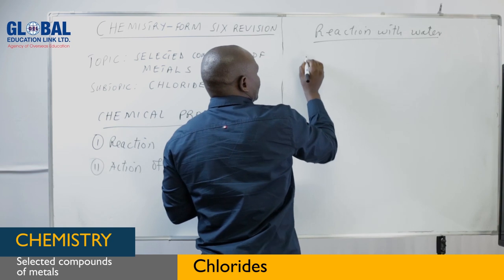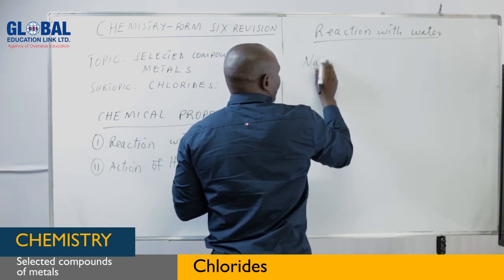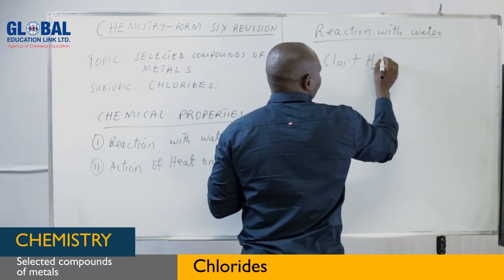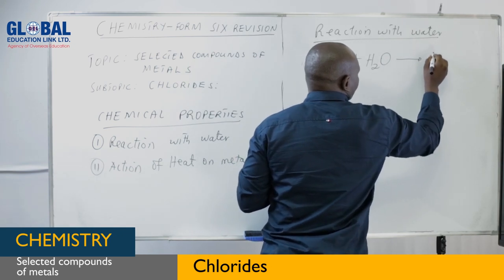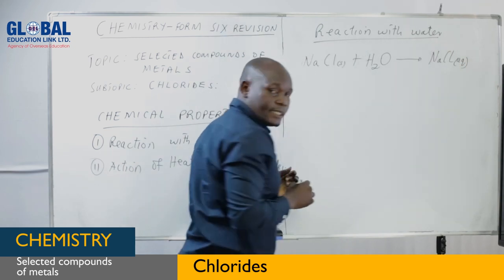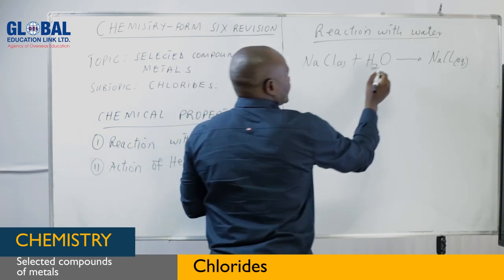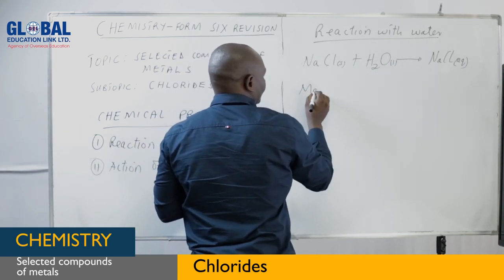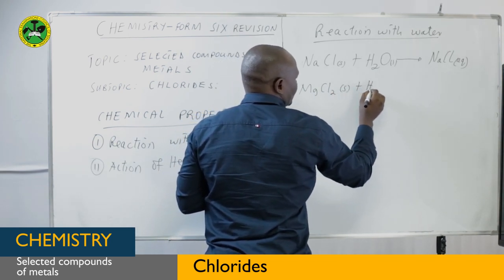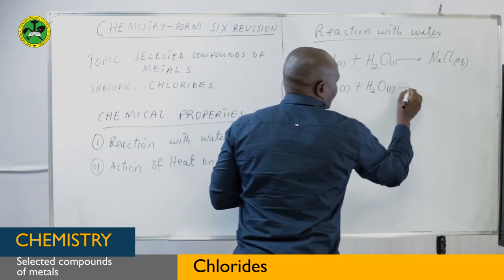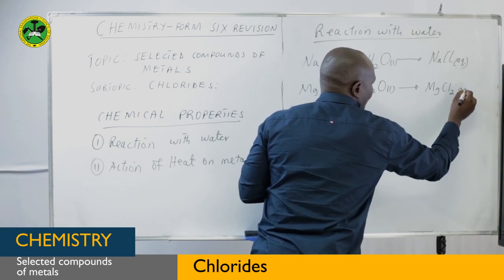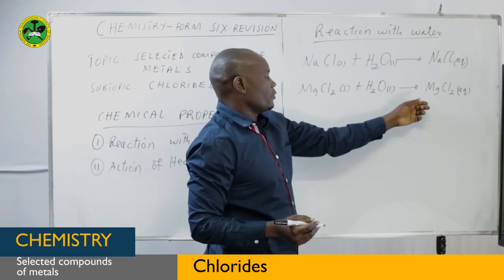Sodium chloride, when in water, just forms an aqueous solution — which means it dissociates into its respective ions. Likewise, magnesium chloride in water also dissociates into its respective ions. So it exists in aqueous state, meaning magnesium chloride aqueous — that means they are ions. You can balance the equation.